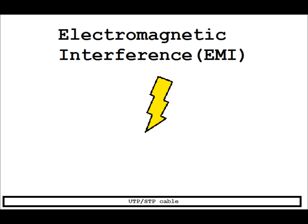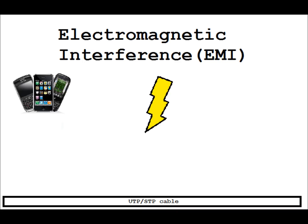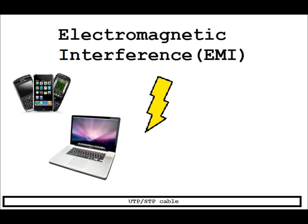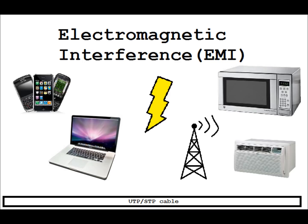Both STP and UTP have electromagnetic interference canceling capabilities; however, each wire is designed to cancel interference differently. Electromagnetic interference, also known as EMI, can be caused by a handful of different items. This includes cell phones, computers, radar systems, and small appliances such as microwaves and air conditioners.